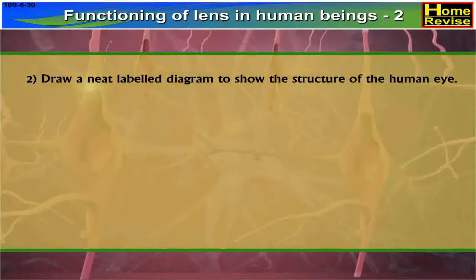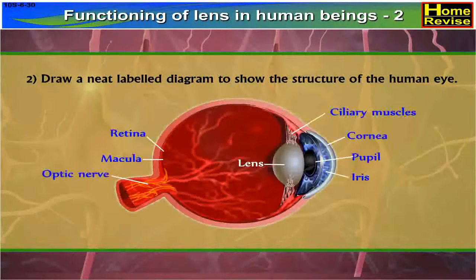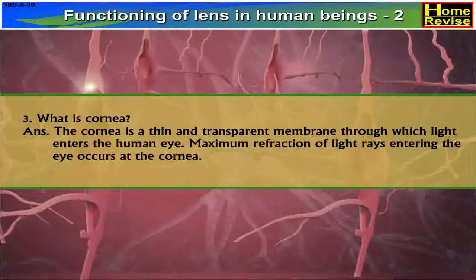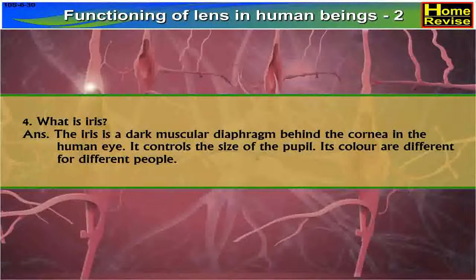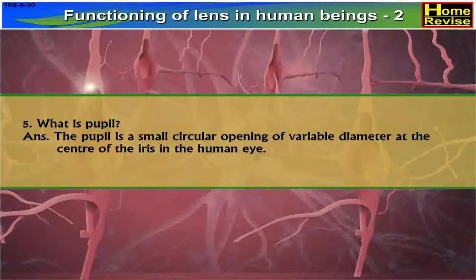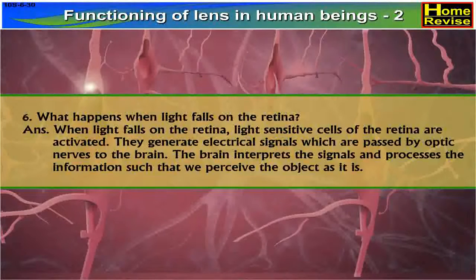2. Draw a neat labelled diagram to show the structure of the human eye. 3. What is cornea? 4. What is iris? 5. What is pupil? 6. What happens when light falls on the retina?